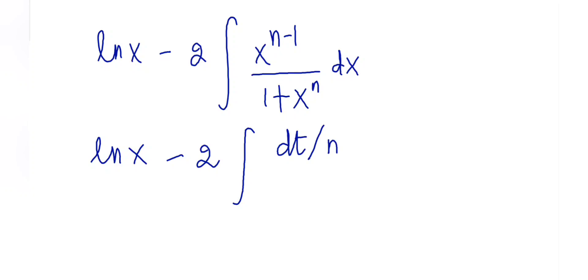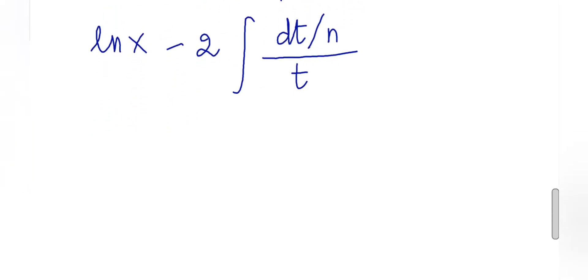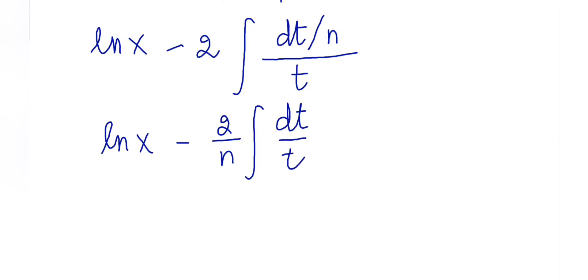A little simplification gives me ln(x) - (2/n) ∫ dt/t, which equals ln(x) - (2/n)ln(t). Now we can easily substitute our t value back.